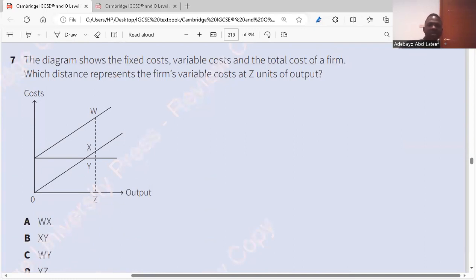Question seven. The diagram shows the fixed cost, variable cost, and total cost of a firm. Which distance represents the firm's variable cost at Z units of output? So what is it now? Variable cost. The difference between the variable cost is W. I didn't get the question. The fixed cost is here. Yeah. The variable cost is at W or the total cost. TC is at W. VC is at Y. Do you get it? And they said which distance represents the firm's variable cost at Z units? The variable cost at Z level of output. Is it W right? Do you get it? Yeah.